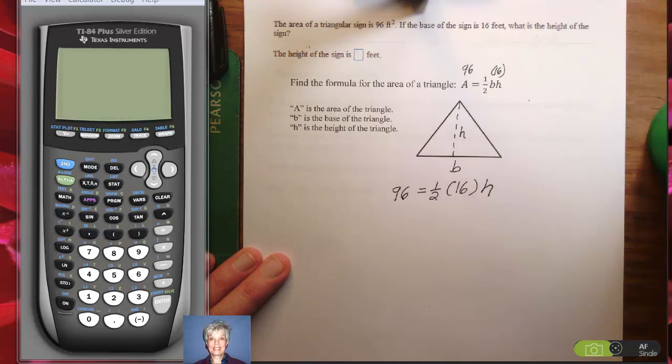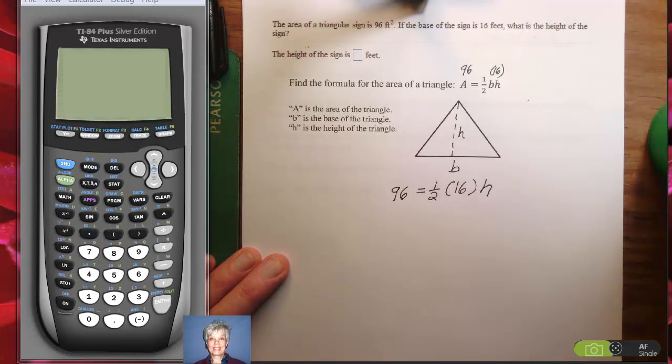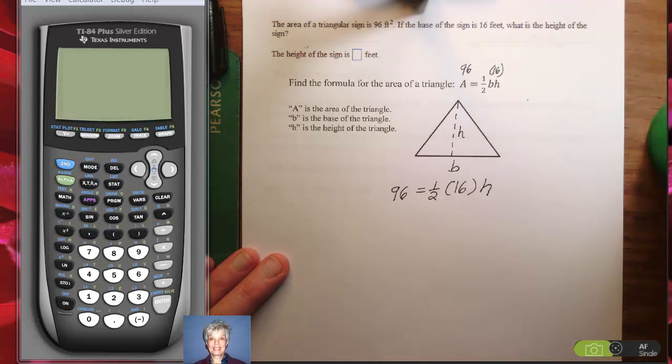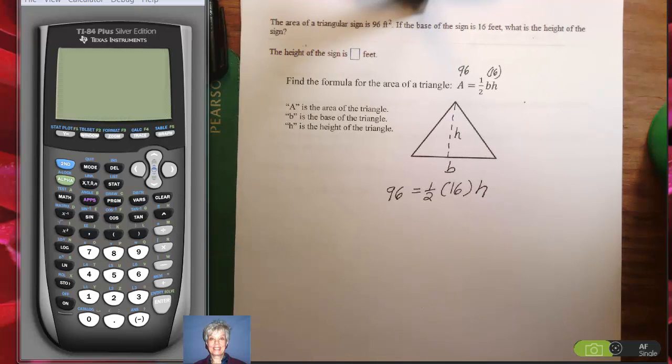And what we have to do is find h, the height of the sign. Well, the first thing you need to do is, if you know that one-half times 16 is 8, it's the same thing as saying one-half of 16. Of means times most of the time in math. But what if you don't know that? Let's do it on the calculator. 1 divided by 2 times 16, enter, is 8.